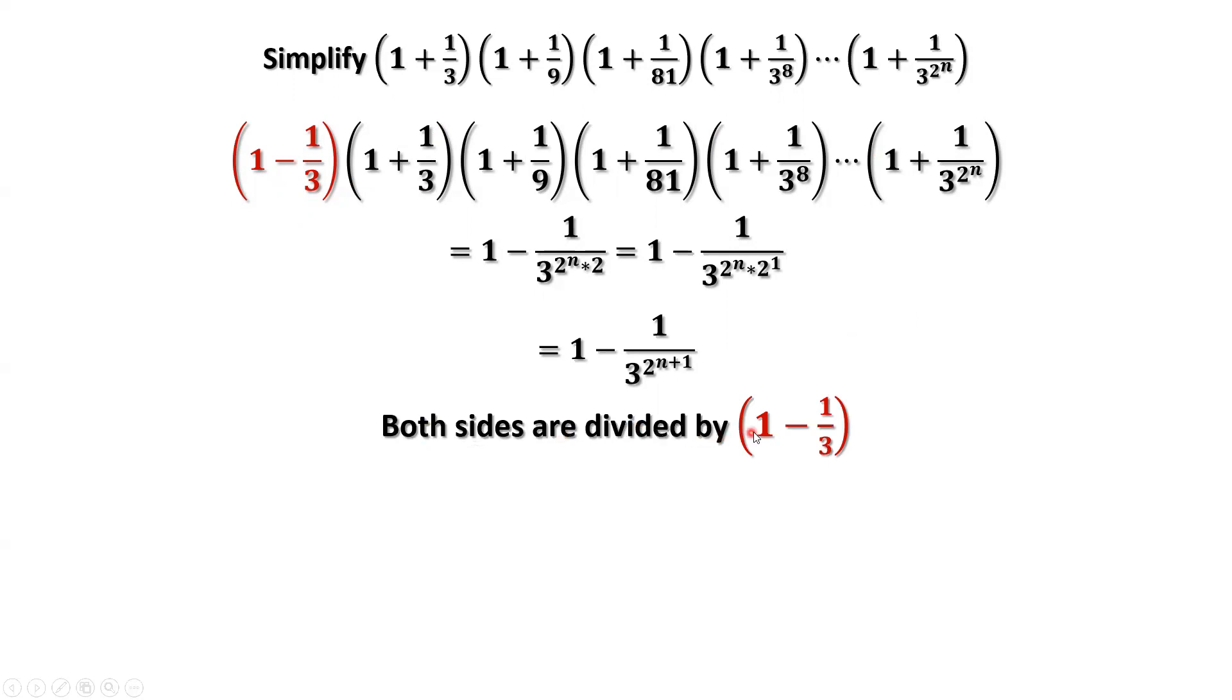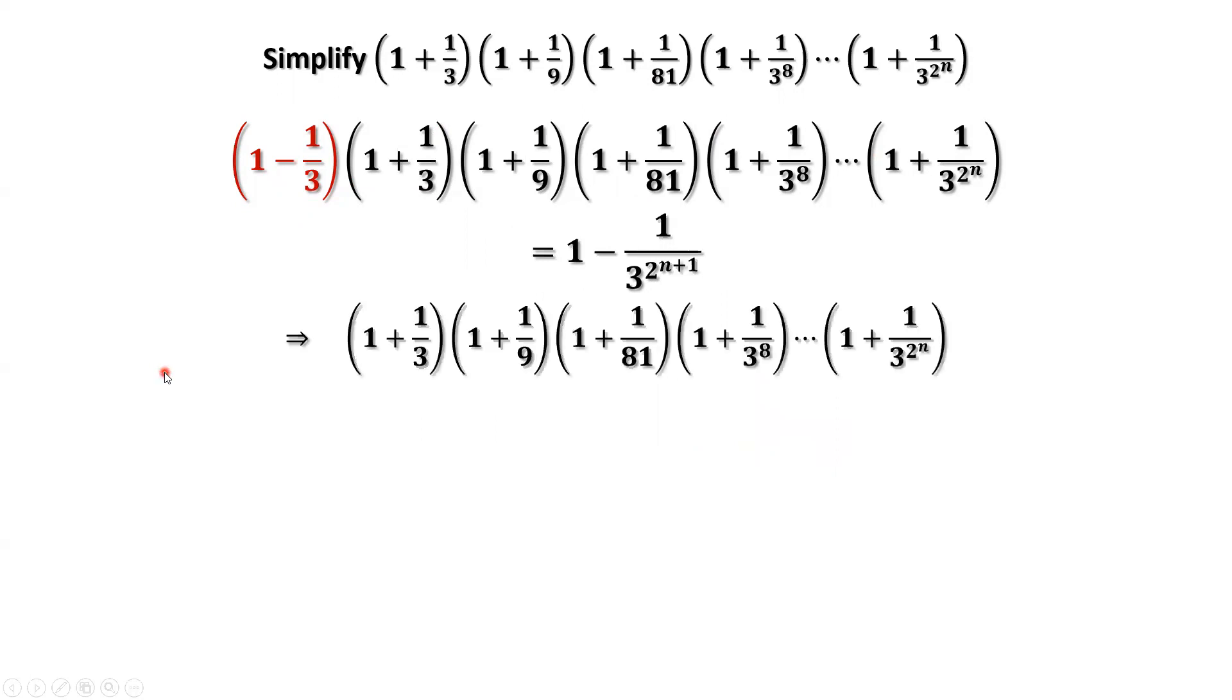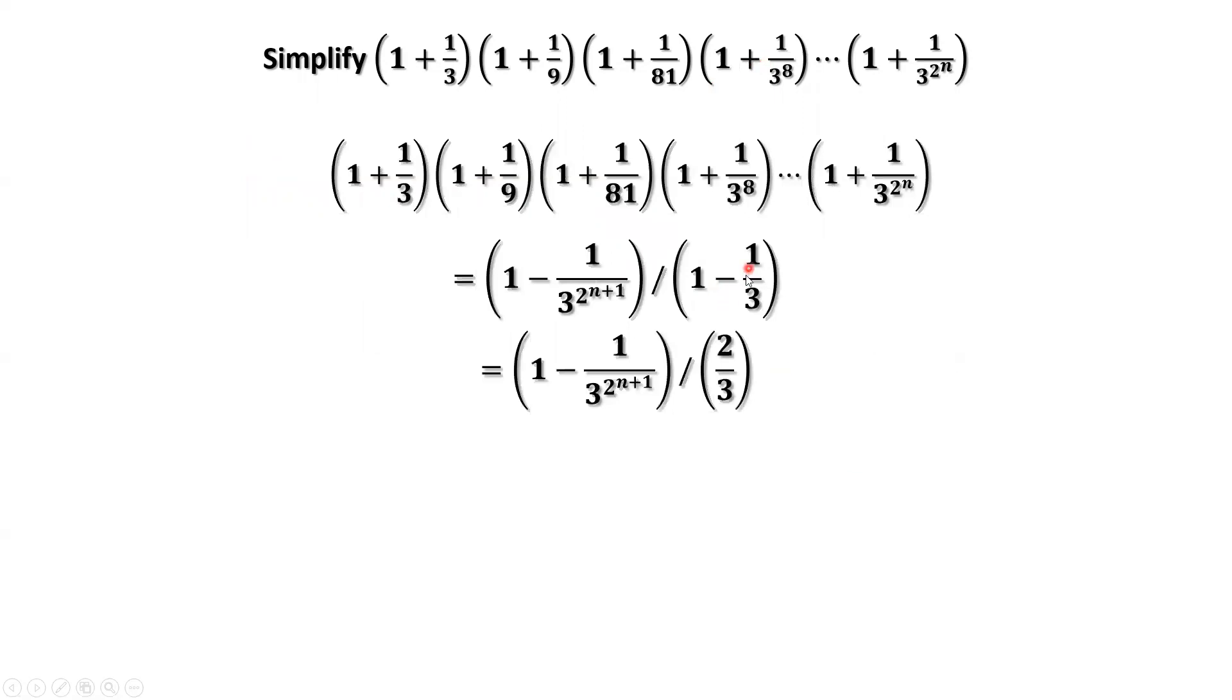Both sides are divided by 1 minus 1 over 3 for this equation. Then we have the left hand side, the same expression we need to simplify. The right hand side needs to divide by 1 minus 1 over 3. 1 minus 1 over 3 is 2 over 3. This is divide. Therefore, the final answer is 3 halves times 1 minus 1 over 3 to the power of 2 to the power of n plus 1.